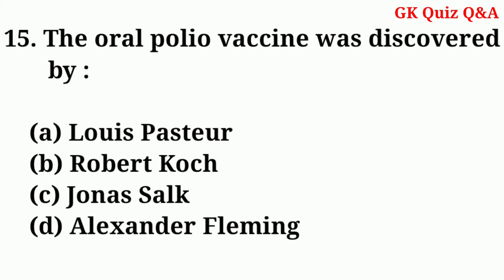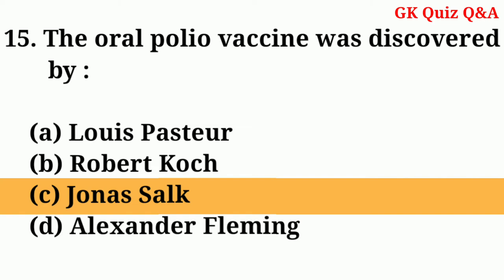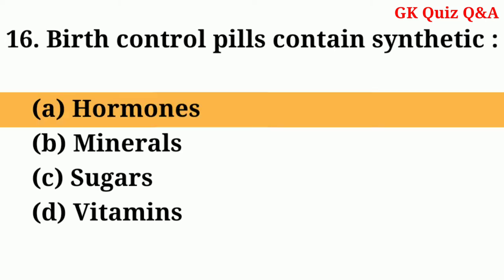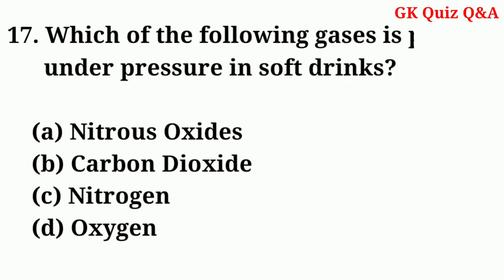The oral polio vaccine was discovered by — Answer: C — Jonas Salk. Birth control pills contain synthetic — Answer: A — Hormones. Which of the following gases is present under pressure in soft drinks?